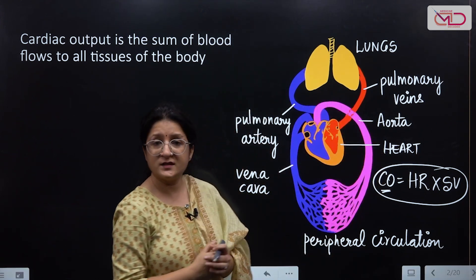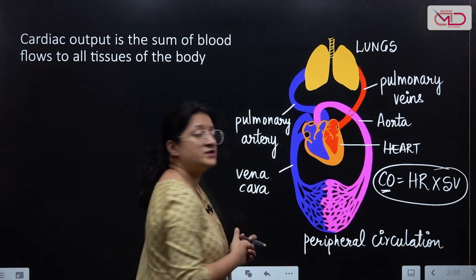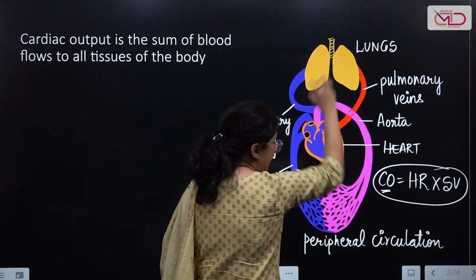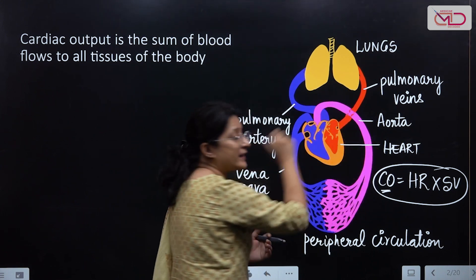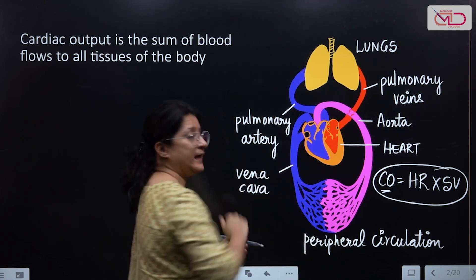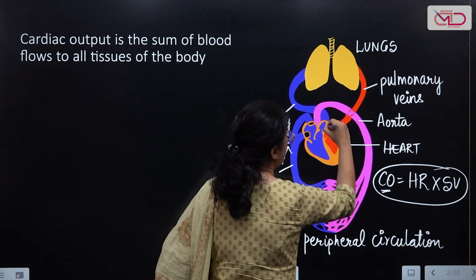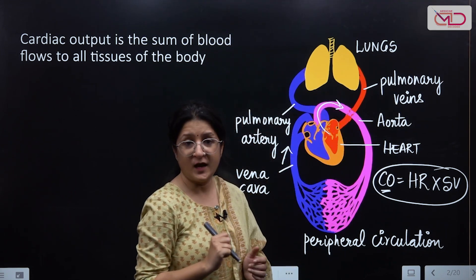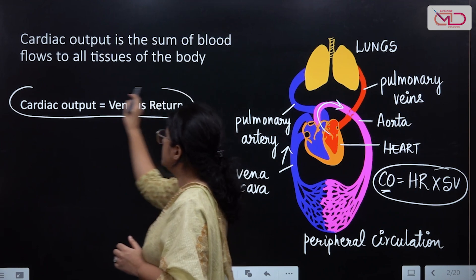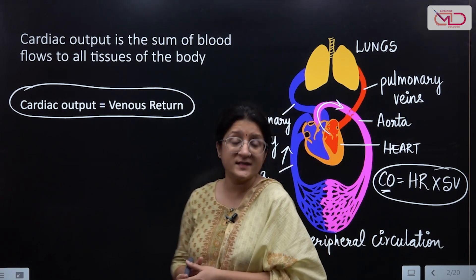At any given point in time, there is a particular amount of venous return — blood returning to the heart — that gets pumped into the lungs and then back into the systemic circulation. Whatever the heart receives in the form of venous return gets pumped forward as cardiac output. So we can say that at any given point in time, cardiac output should be equal to venous return.